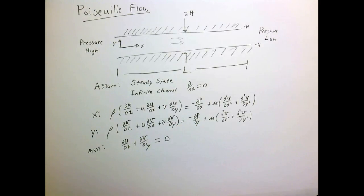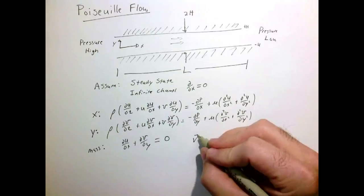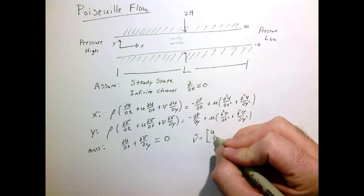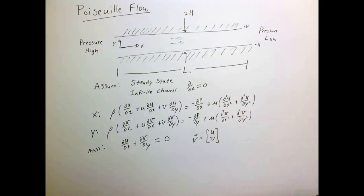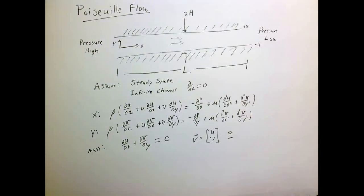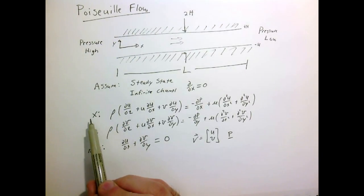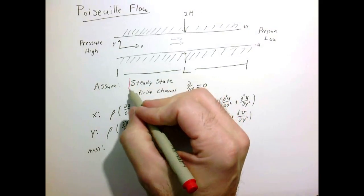We have three equations. We're solving for our velocity vector with components u and v, and also for the pressure p. We have two momentum conservation equations — in the x and y directions — and conservation of mass.